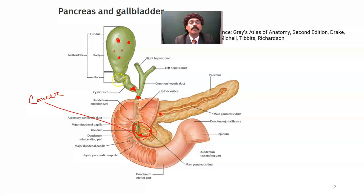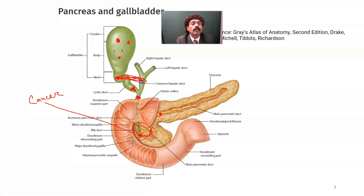There may also be stone formation in the Hartmann's pouch, which is usually present on the posterior medial aspect of the neck of the gallbladder. That may block the common hepatic duct. The gallbladder may be enlarged with the large stone in the Hartmann's pouch here, and that may also lead to enlargement of the gallbladder.